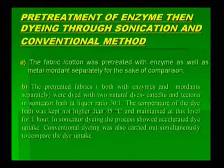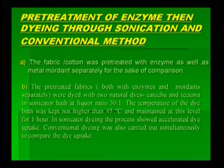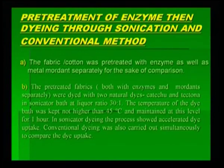The pre-treated fabric — both with enzyme and mordant separately — were dyed with two natural dyes, catechu and tectona. Catechu is brown in color and tectona gives a reddish color. In a sonicator bath at liquor ratio 30:1, the temperature of the dye bath was kept no higher than 45 degrees centigrade and maintained at this level for 1 hour. In sonicator dyeing, the process showed accelerated dye uptake. Conventional dyeing was also carried out simultaneously to compare the dye uptake — to prove the faster method, both were done together and in 1 hour the dye uptake in both cases was measured.